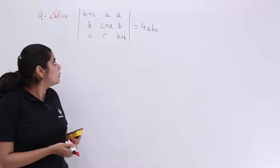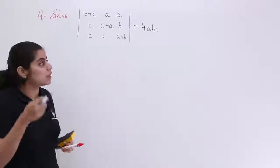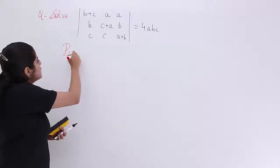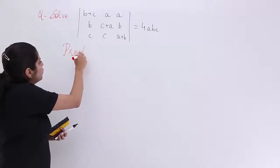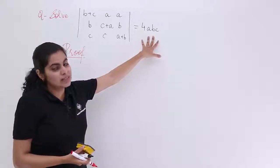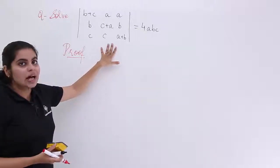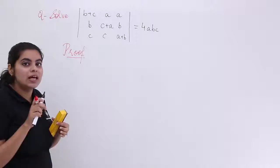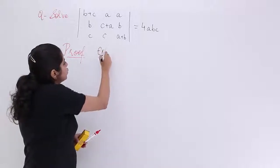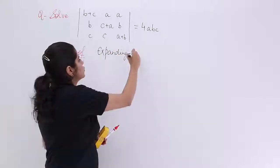Let's commonly start with evaluation along the 1st row. I write the heading as 'Proof' because it is a proof question — we have to prove the determinant value equals 4abc. Let's get started with the solution by expanding along the 1st row.